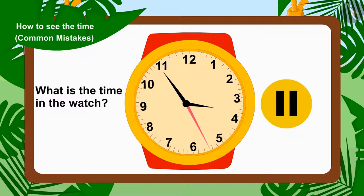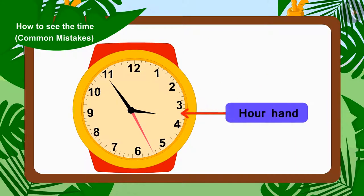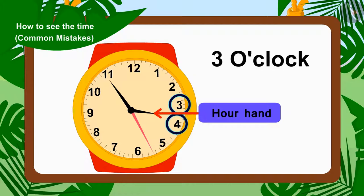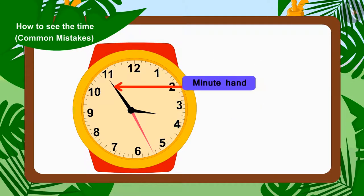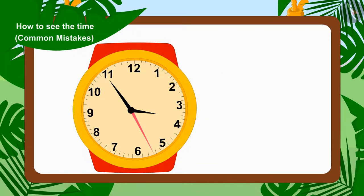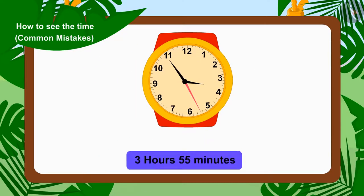You can stop the video and find the answer. That's correct. The hour needle is between 3 and 4, so it was past 3 o'clock. And the minute needle is on number 11, so 11 times 5 is 55 minutes. In this way, the time in the watch is 3 hours 55 minutes.